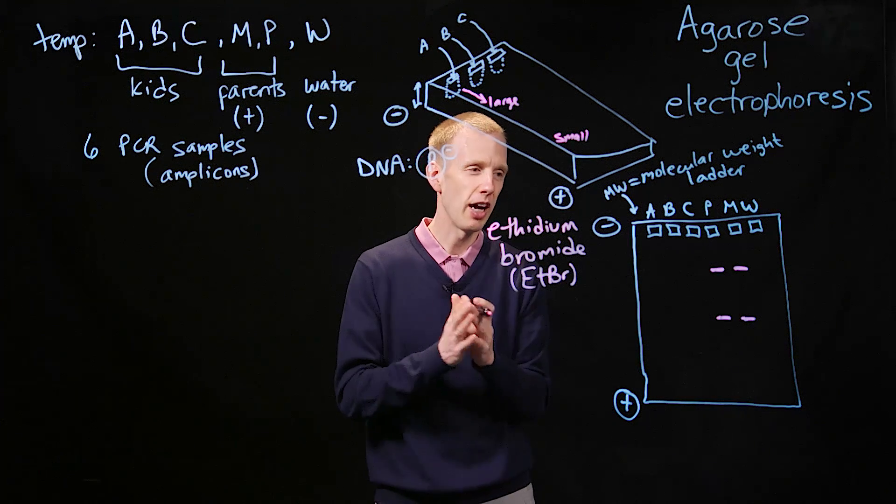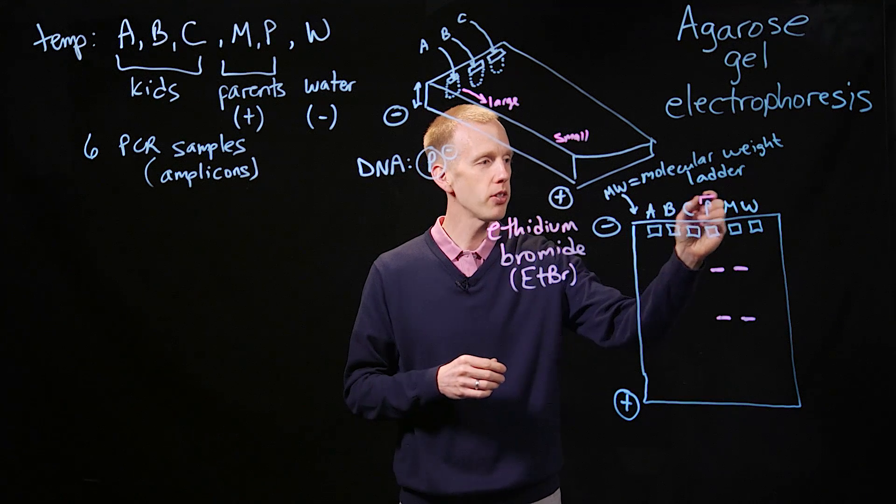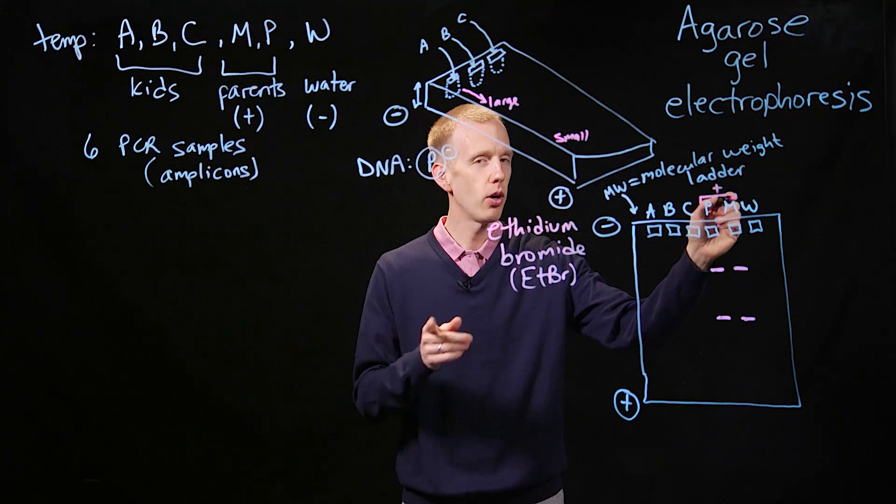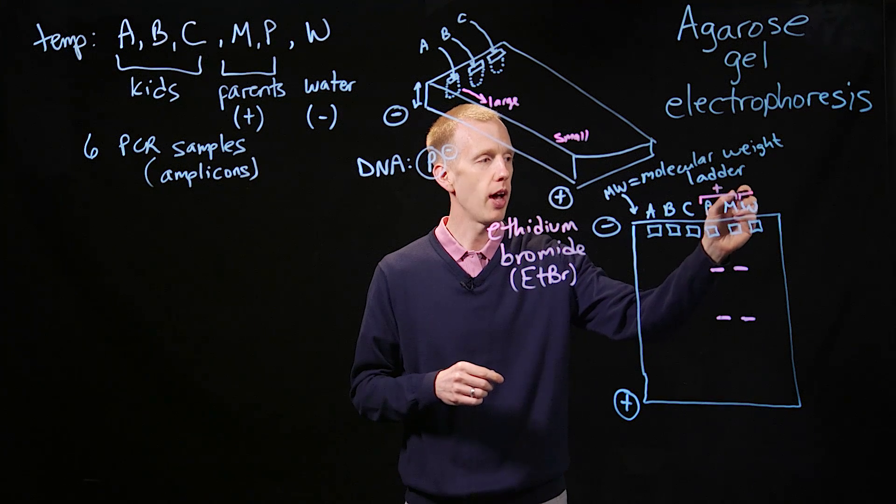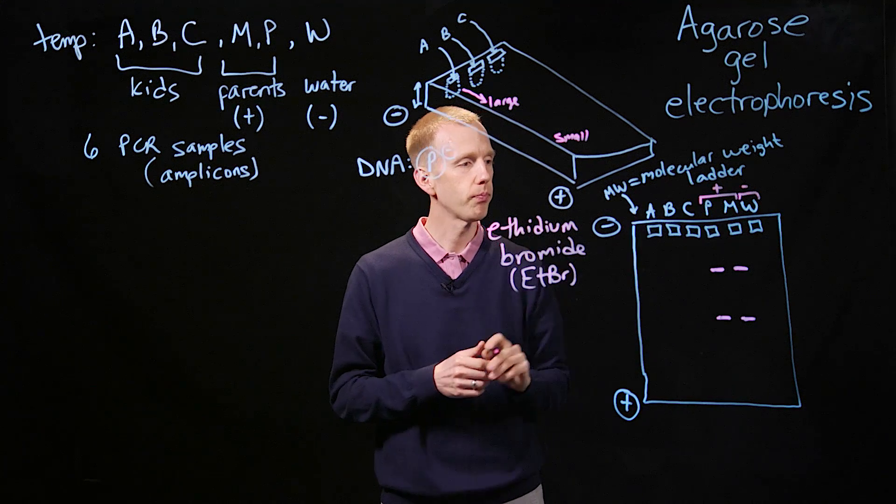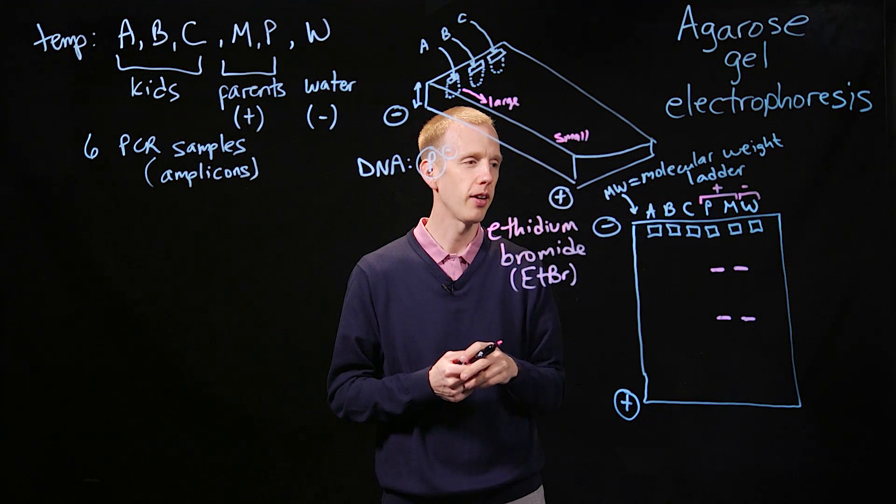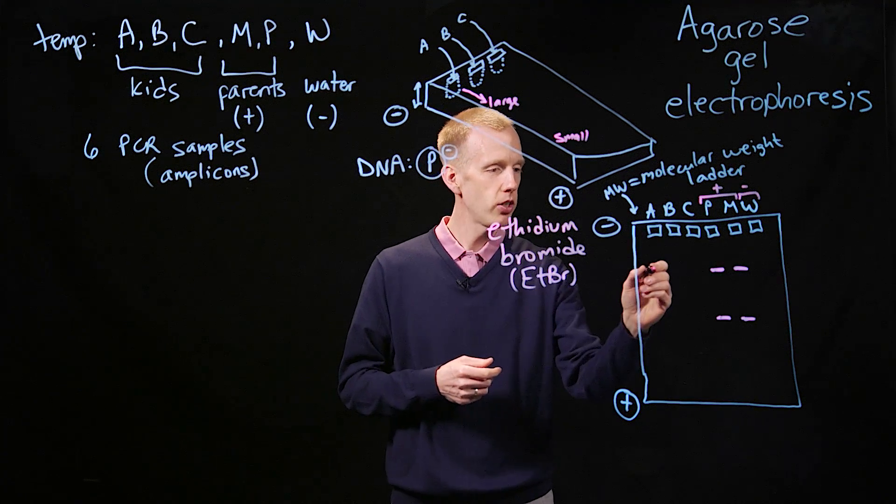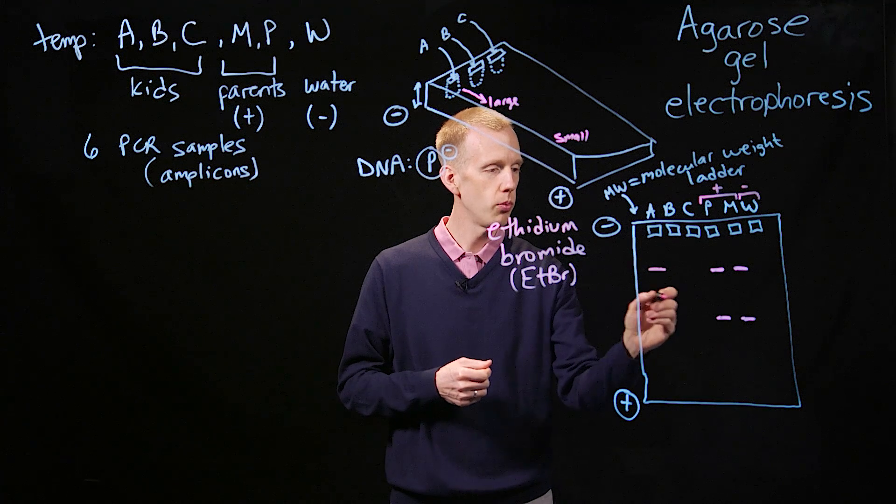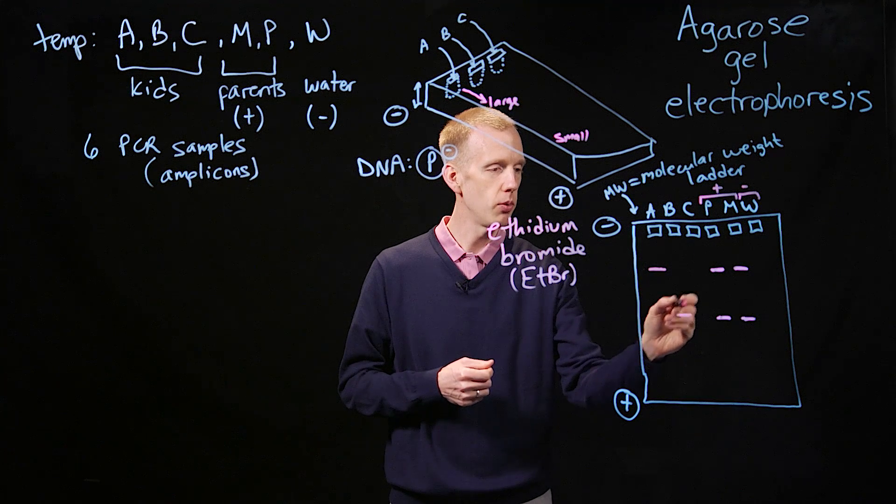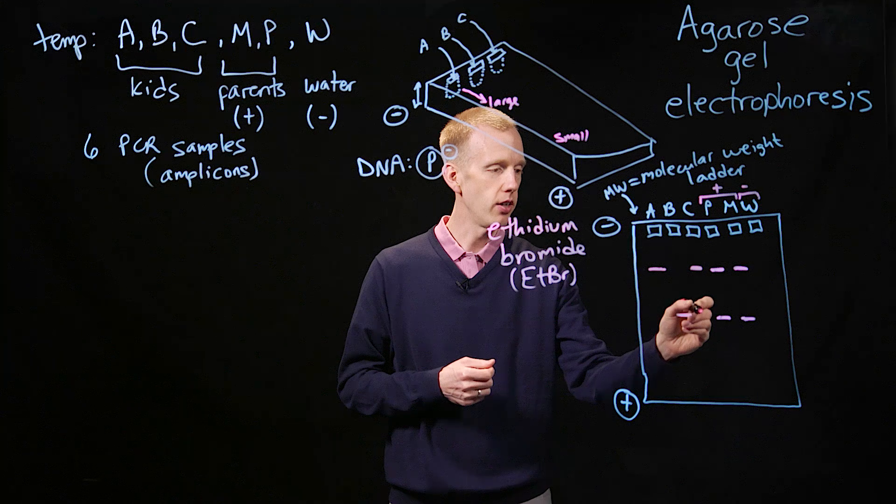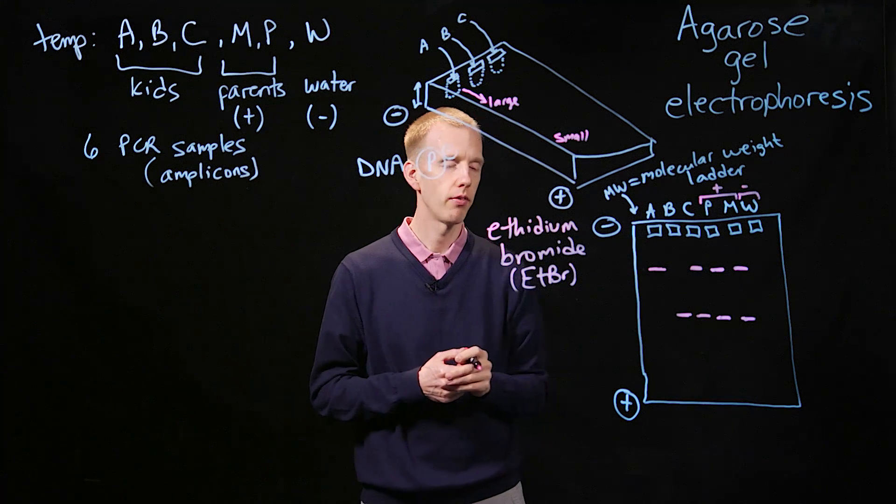So here comes the actual analysis. Those are the positive control wells. Now we know mom and dad's genotypes, and we have a negative control well. So what are the kids' DNA samples going to look like? So let's imagine that kid A, we see one band, kid B, we see one band, and here's the third child, has two bands. What does this mean?